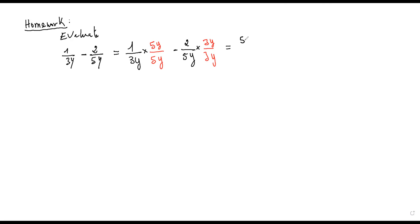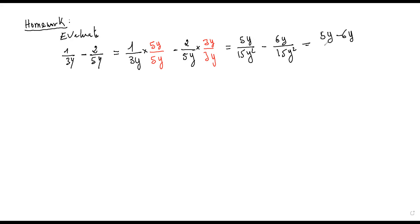One times five y would be five y. Three y times five y: three times five is fifteen, and y times y is y squared. Minus two times three y: two times three y is six y. Five times three is fifteen, y times y is fifteen y squared. Now they have the same denominator, fifteen y squared. So you do five y minus six y over fifteen y squared.